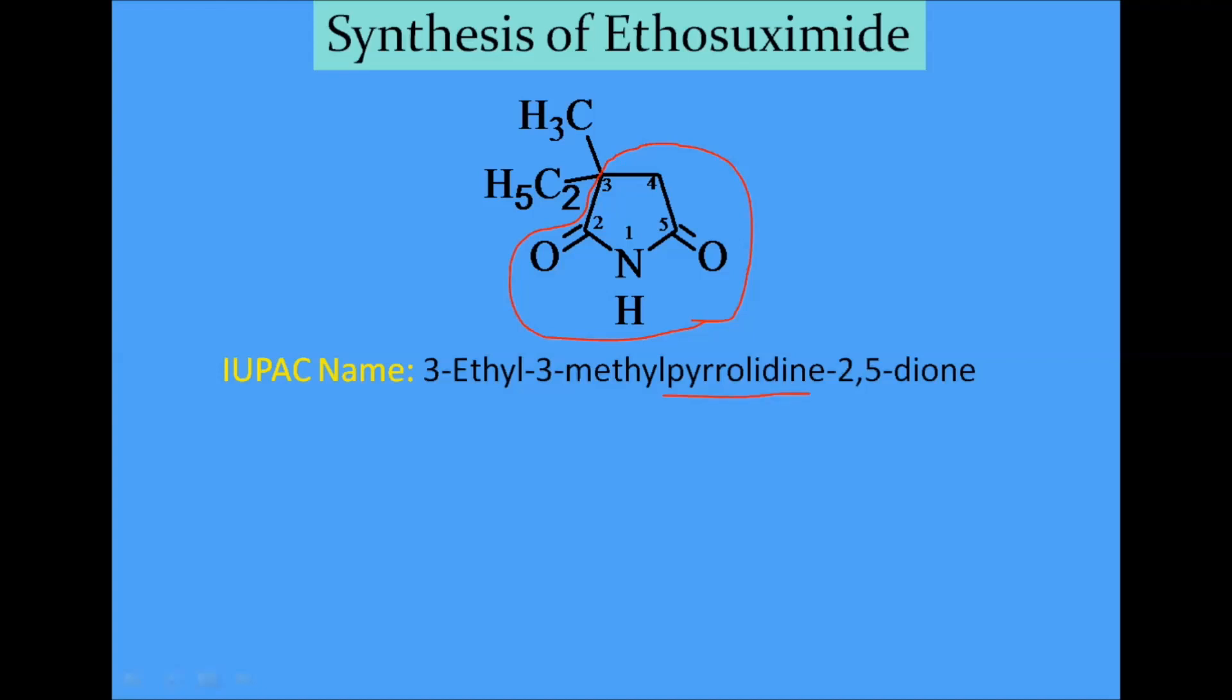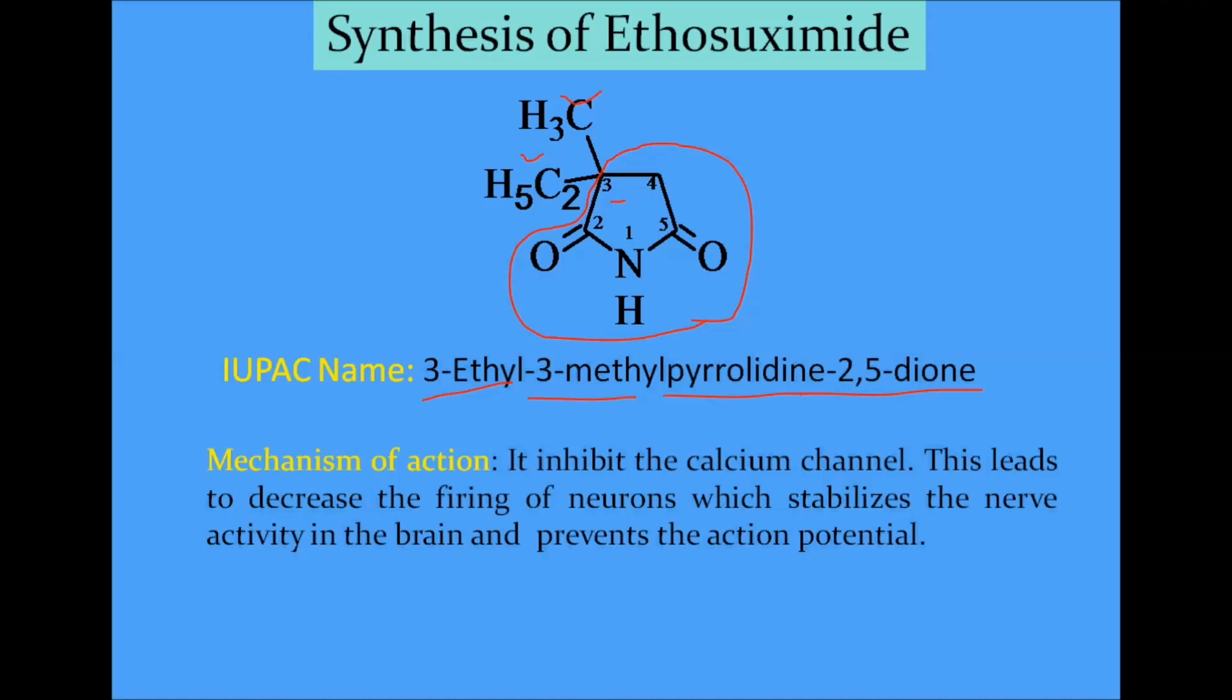Pyrrolidine which has 2,5-dione, and in ethosuximide one methyl and one ethyl group are present at the three position. What is the mechanism of action? It inhibits the calcium channel. By inhibition of the calcium channel, this leads to decrease the firing of neurons which stabilizes the nerve activity in the brain and ultimately prevents the action potential.